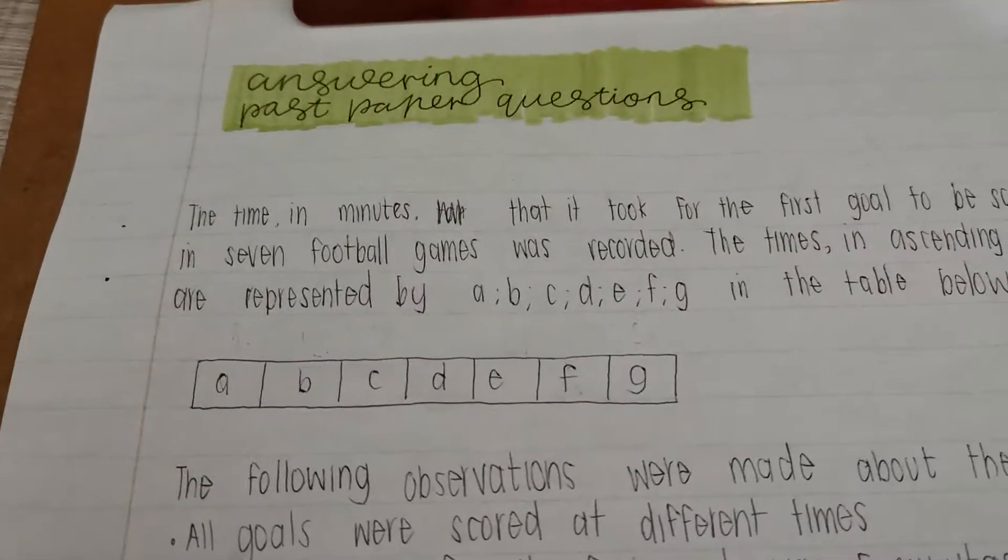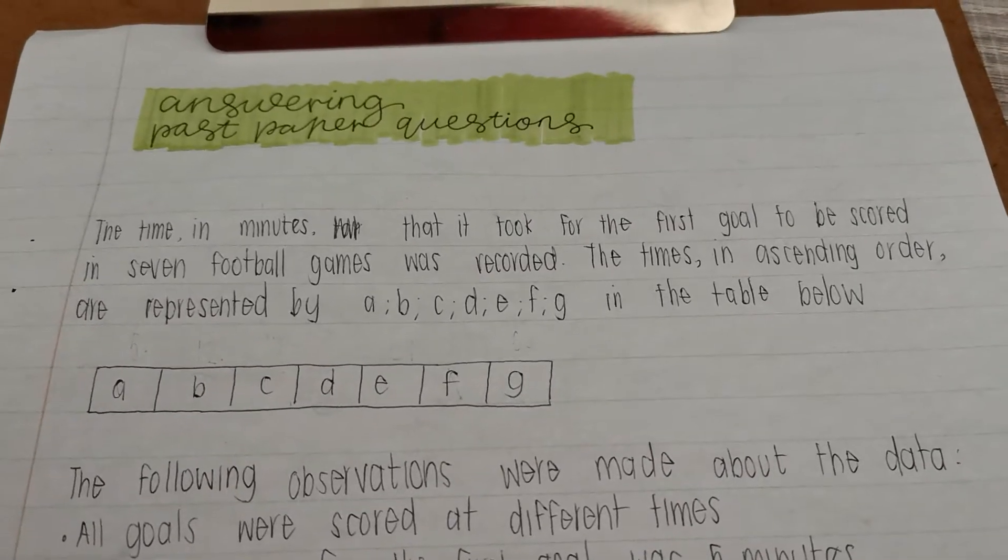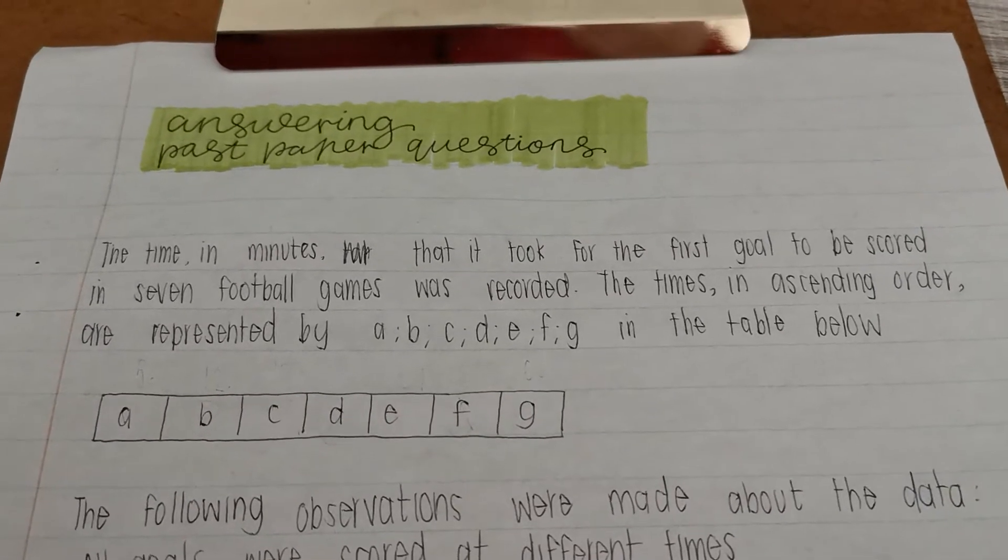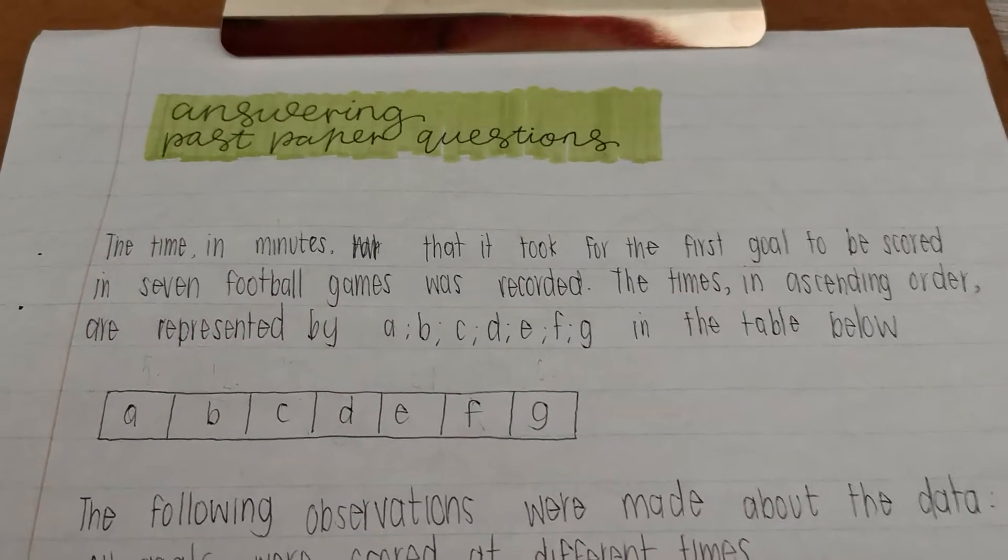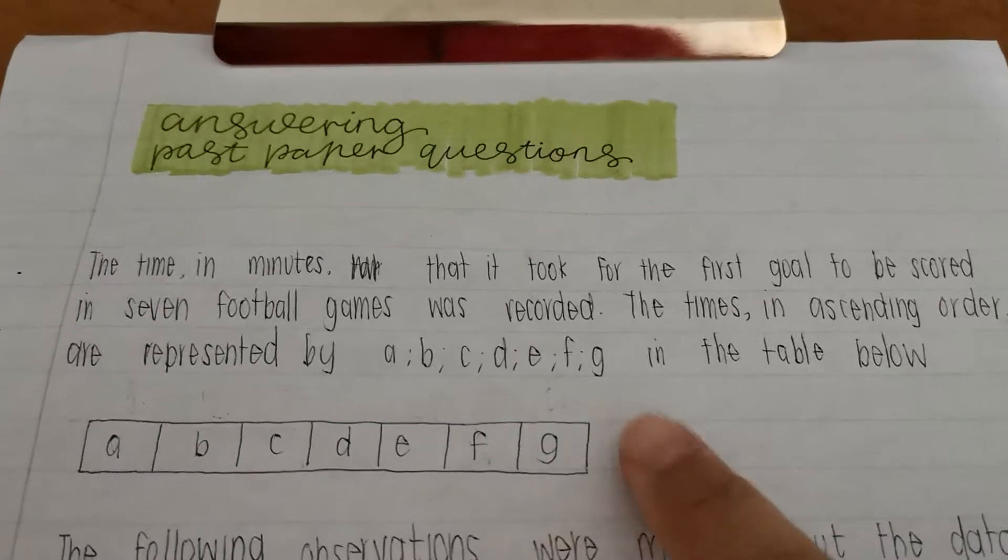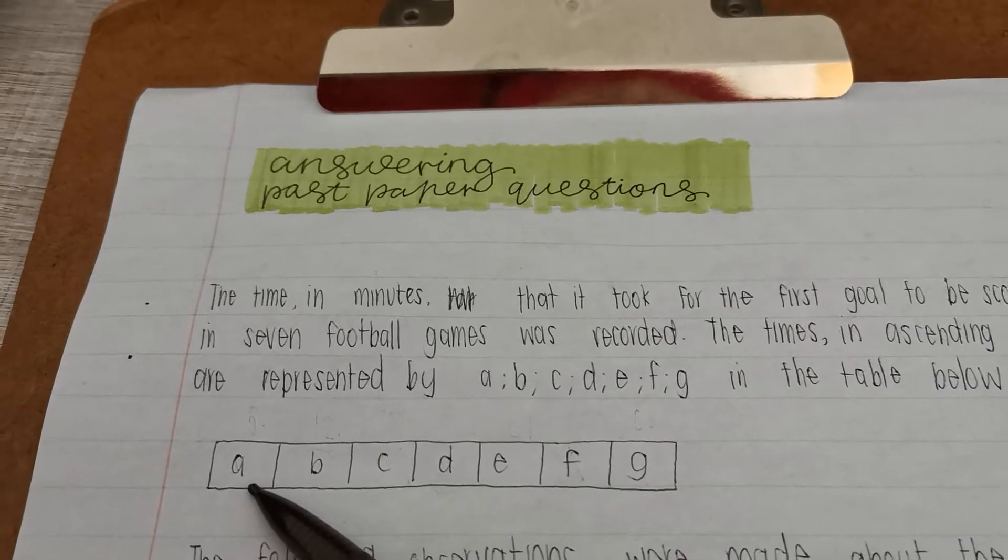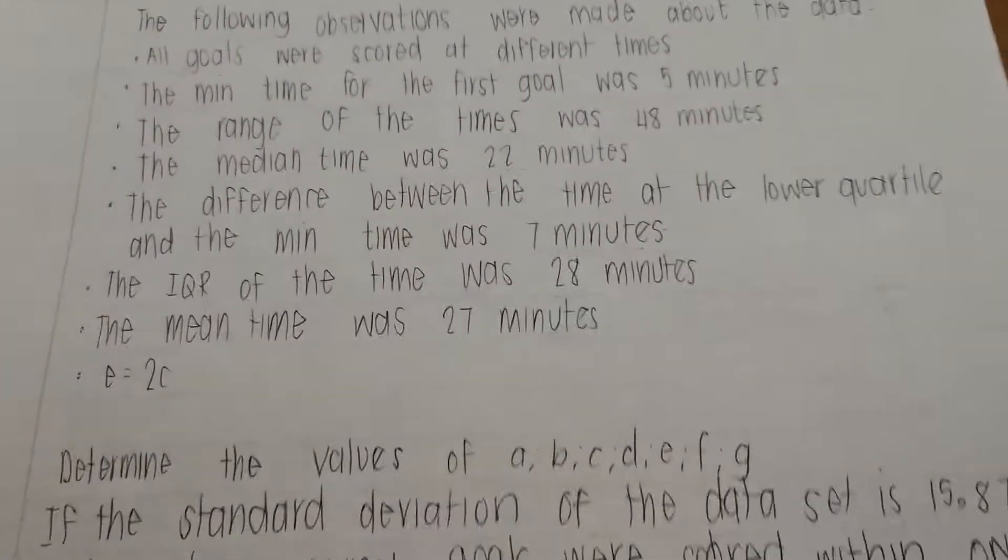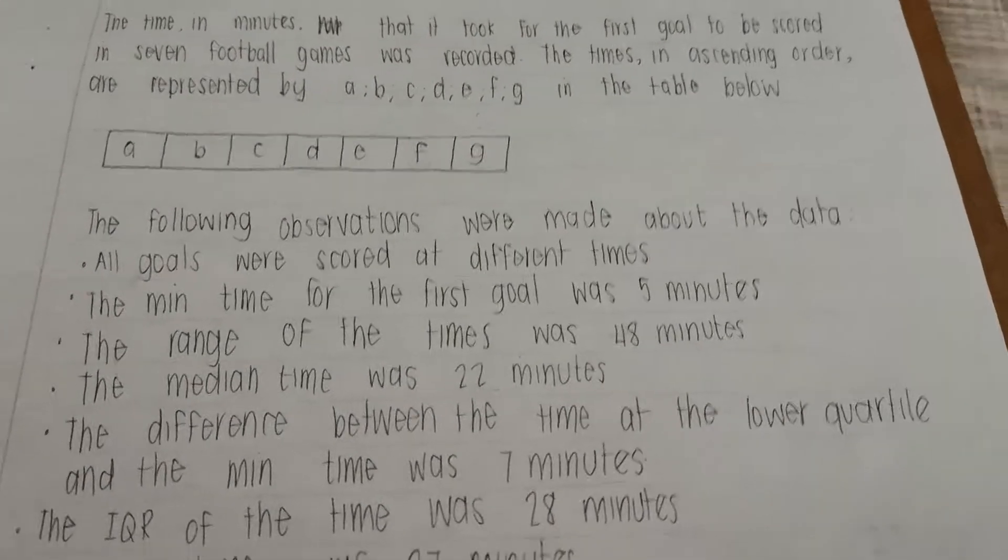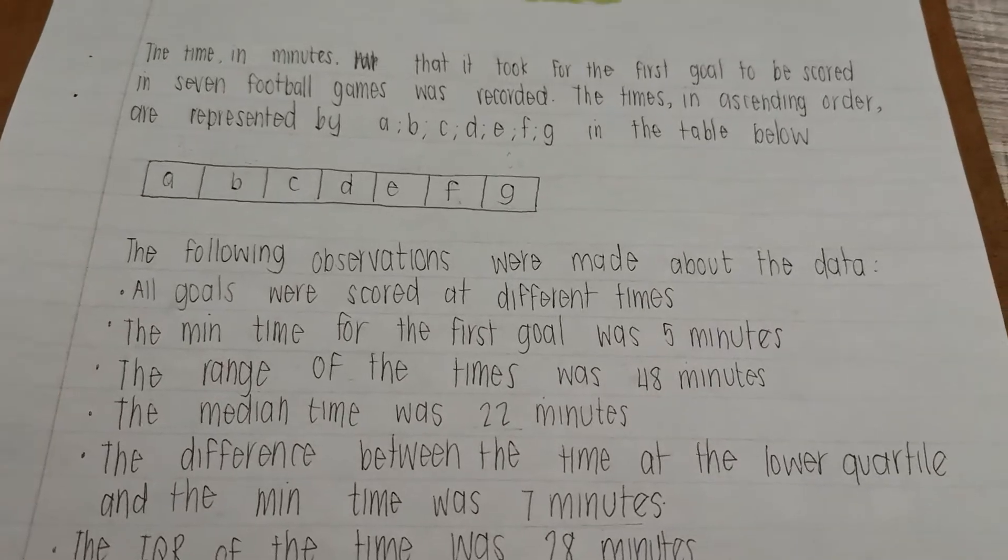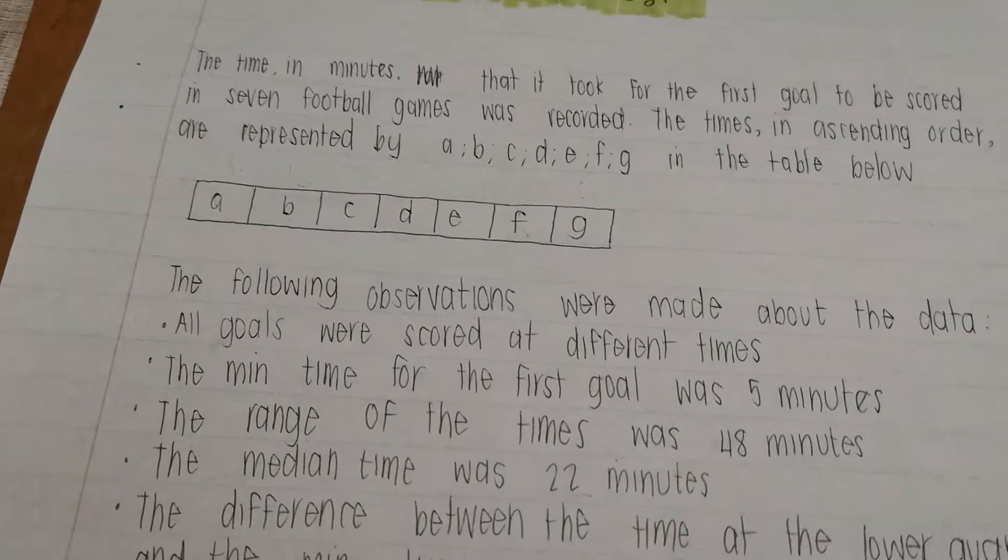Okay, so we're answering past paper questions. This one over here says... Now we know that it's ascending, meaning that this one over here is definitely the smallest, this is the biggest. They want us to find out what these values are, and in order to do that, they gave us some information, some observations that were made. It says that all goals were scored at different times, meaning that each one of these numbers are different.